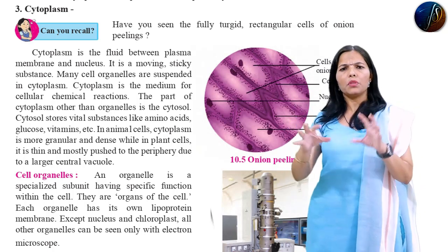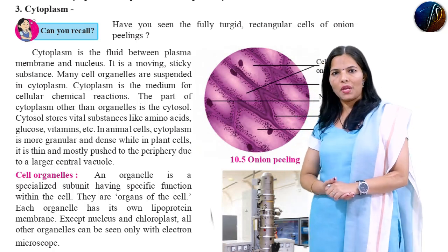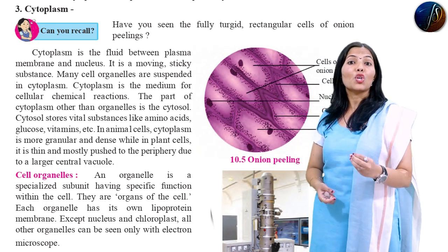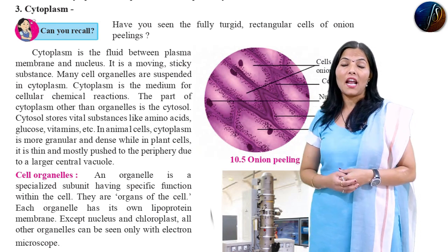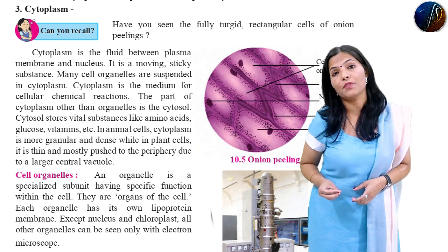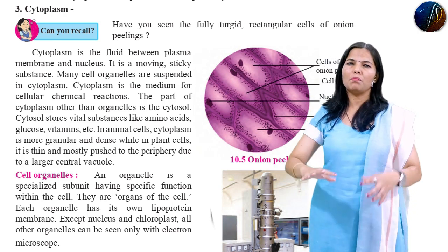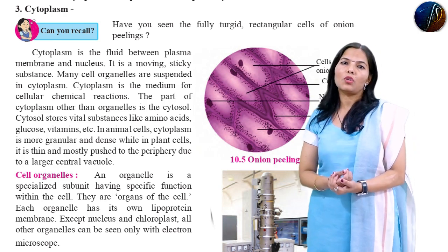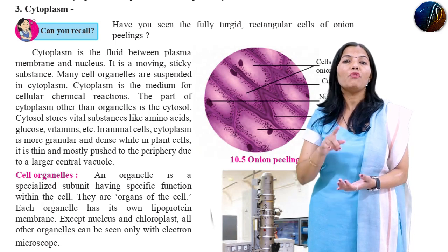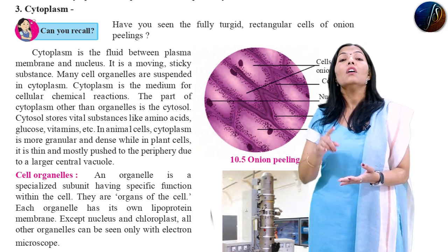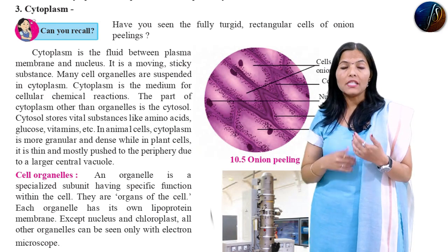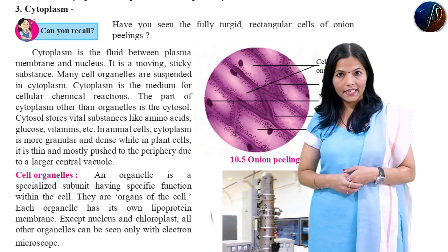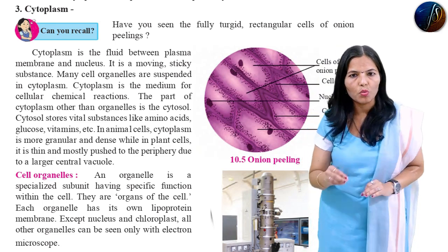So we have to understand cytosol. Cytosol is the ground-level substance in the cytoplasm. Cytosol contains vitamins, minerals, vital substances, amino acids, and glucose. All of these are present in the cytosol.